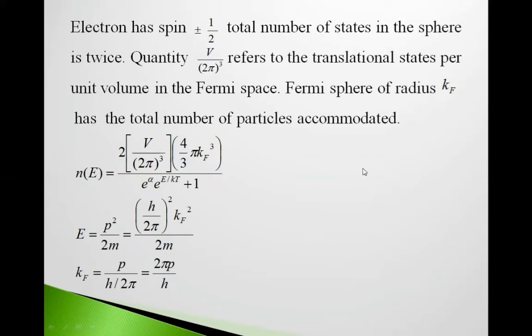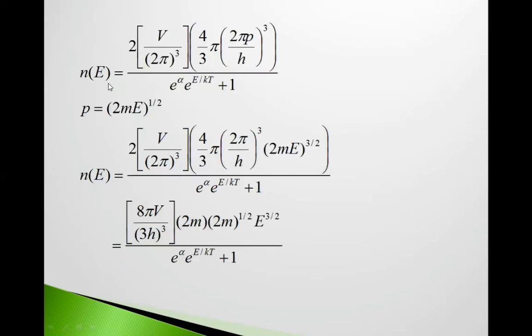So n(E) = 2V/(2π)³ × 4/3 π kF³ / (e^(α+E/kT)+1). E = p²/2m = (ℏ/2π)² kF²/2m. So kF = p/(ℏ/2π) = 2πp/ℏ. Therefore n = 2V/(2π)³ × 4/3 π(2πp/ℏ)³ / (e^(α+E/kT)+1).